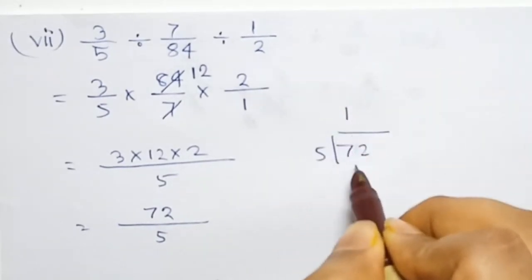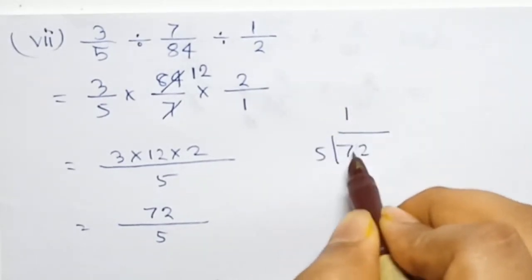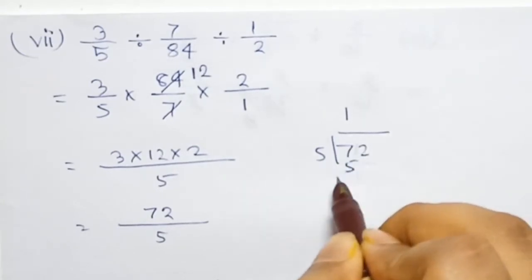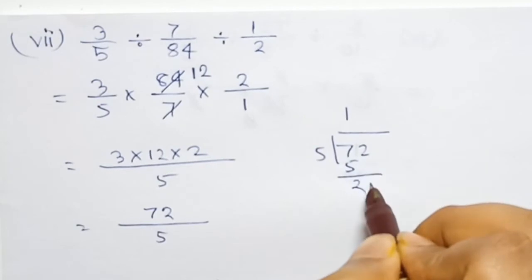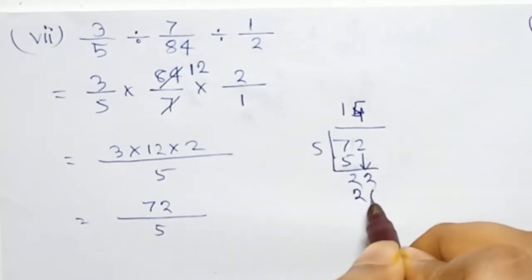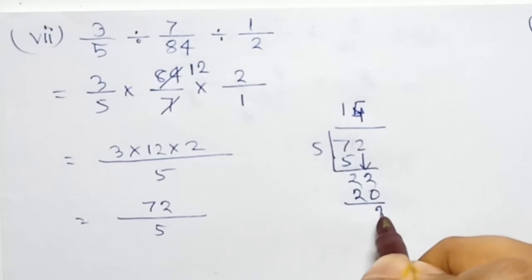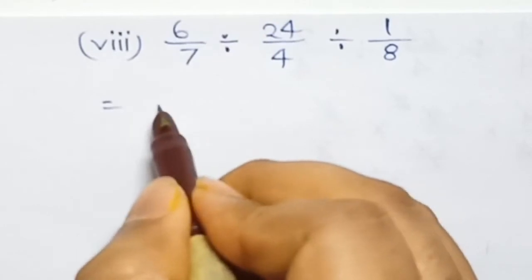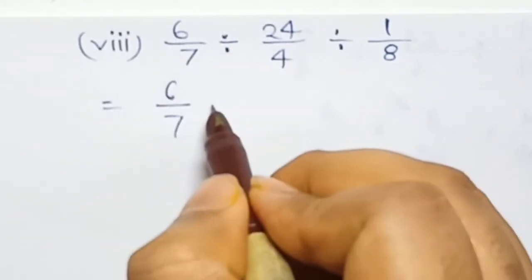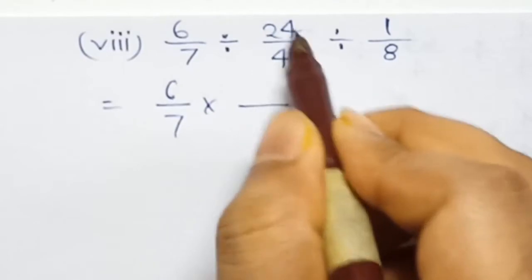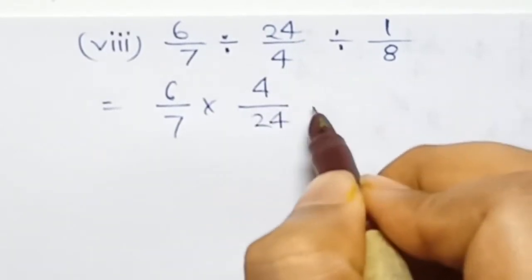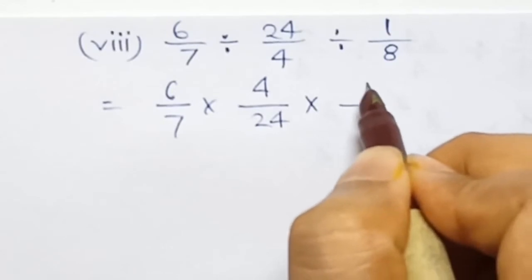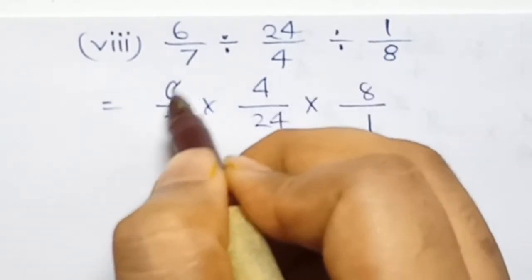Three into twelve into two — product is seventy-two divided by five. Seventy-two divided by five: five into seventy-two — five over, next two, bring down twenty. Remainder of two. So finally the answer is 14 whole 2 by 5. Next answer: six by seven — divide becomes multiplication — reciprocal gives 4 by 24.